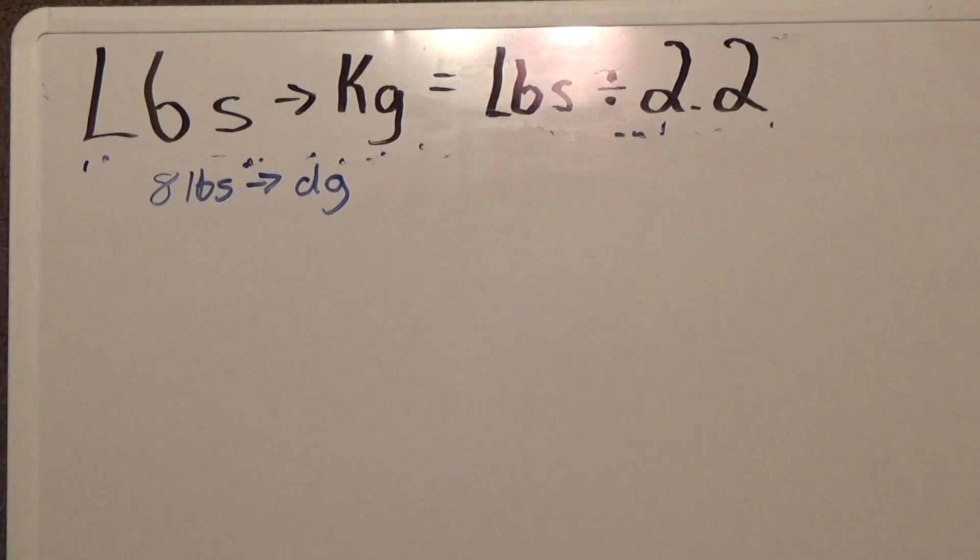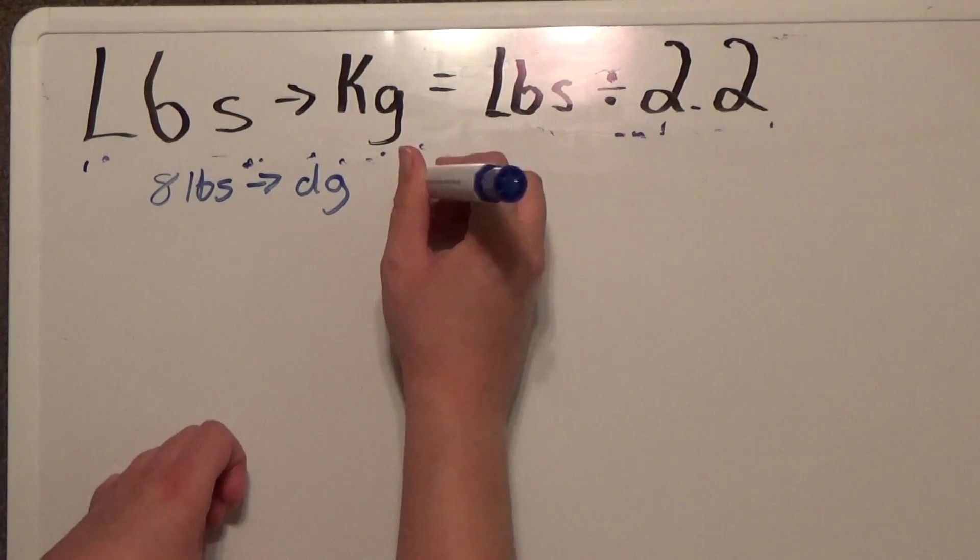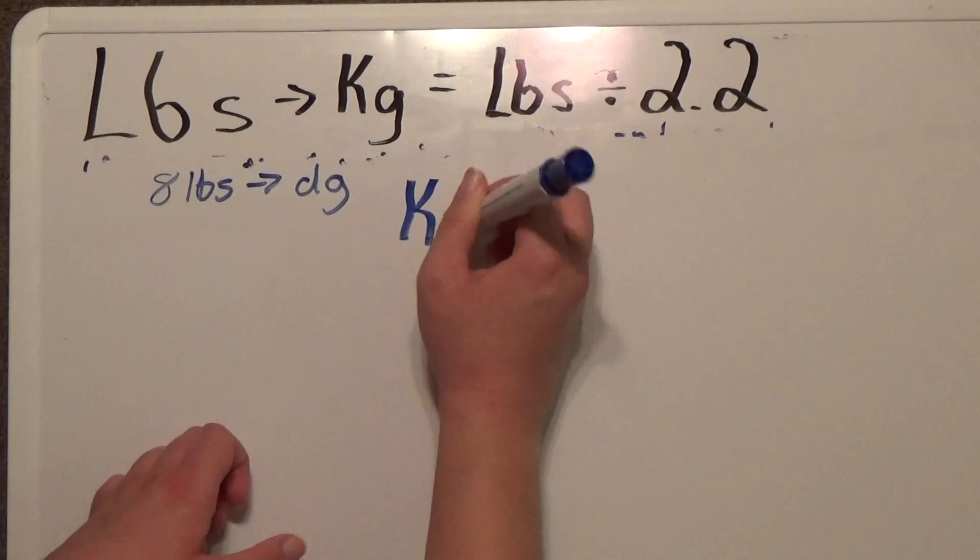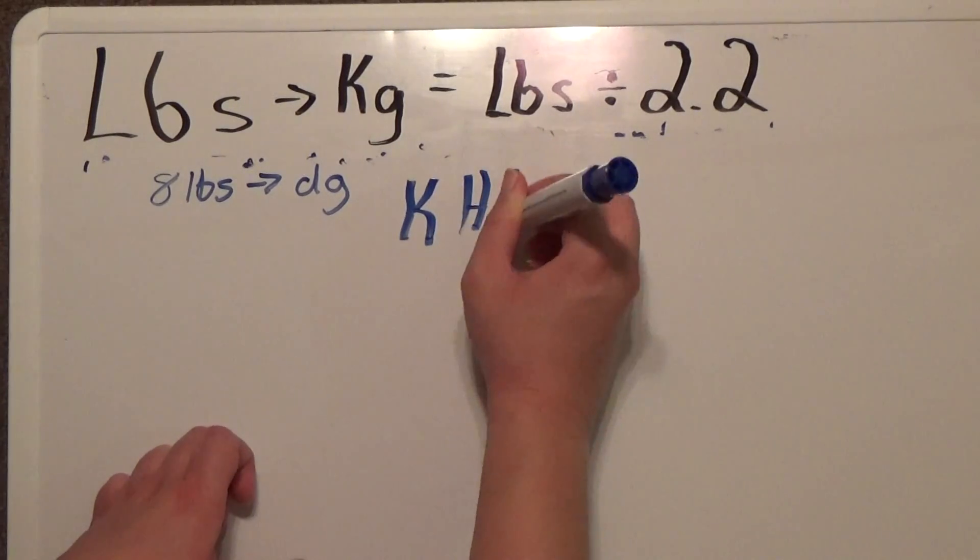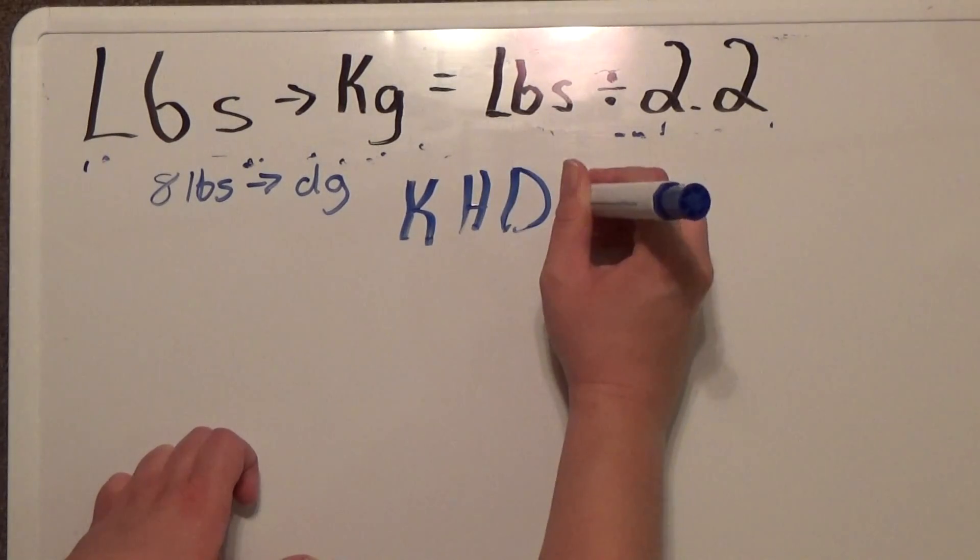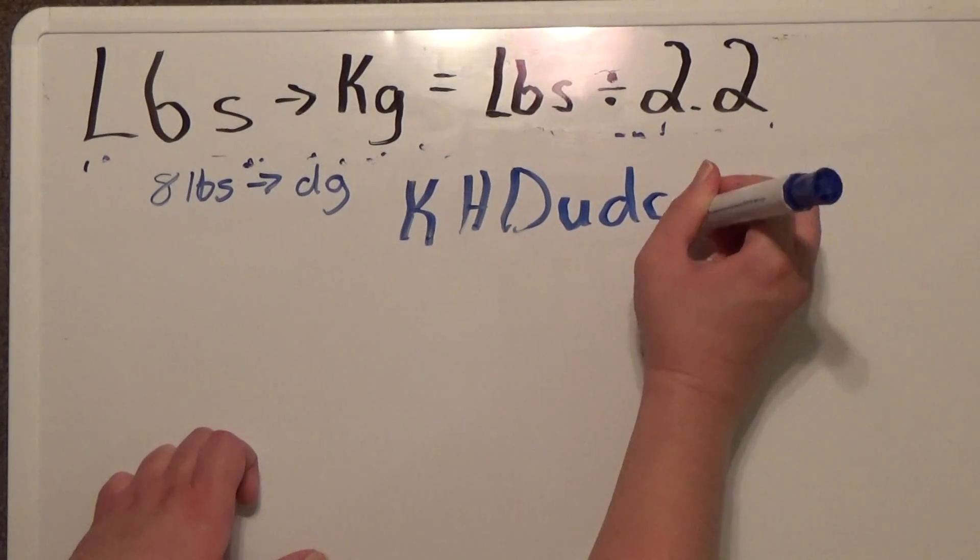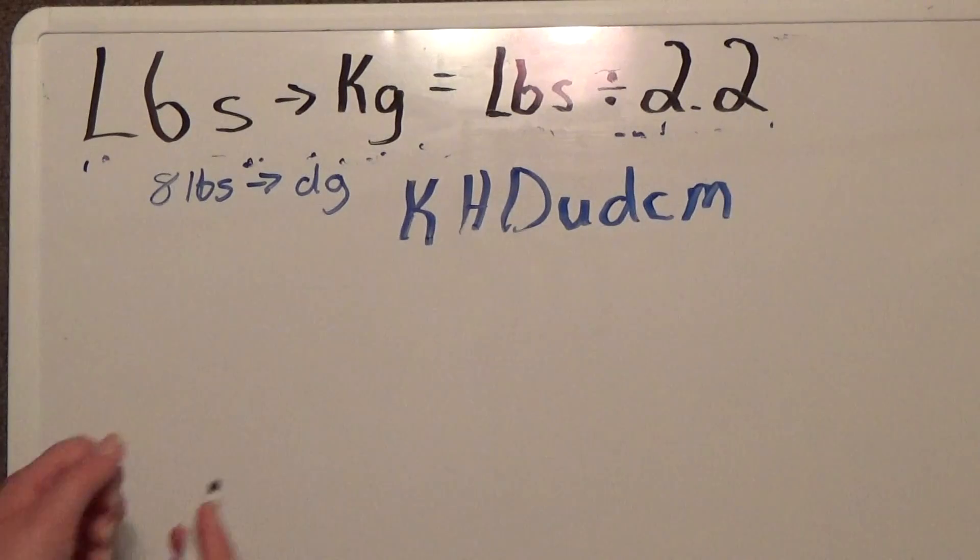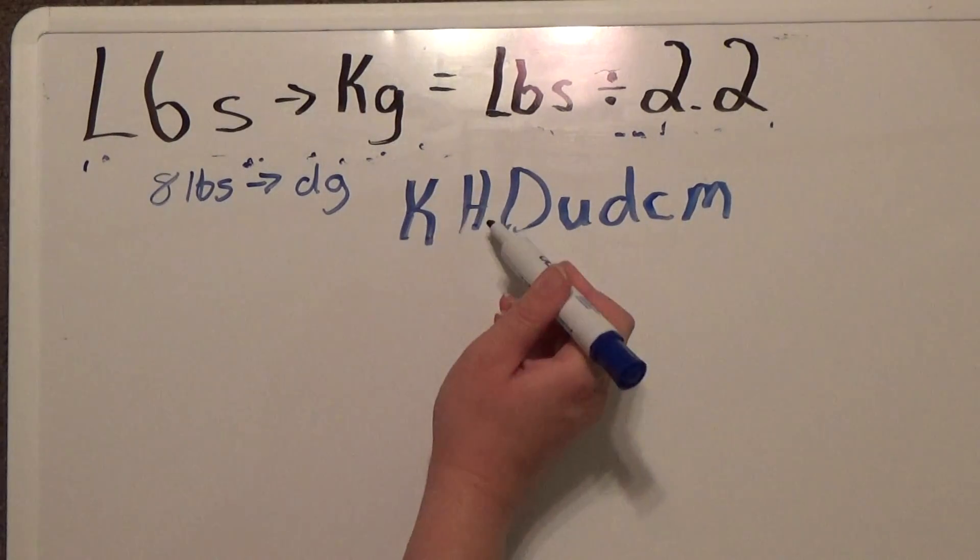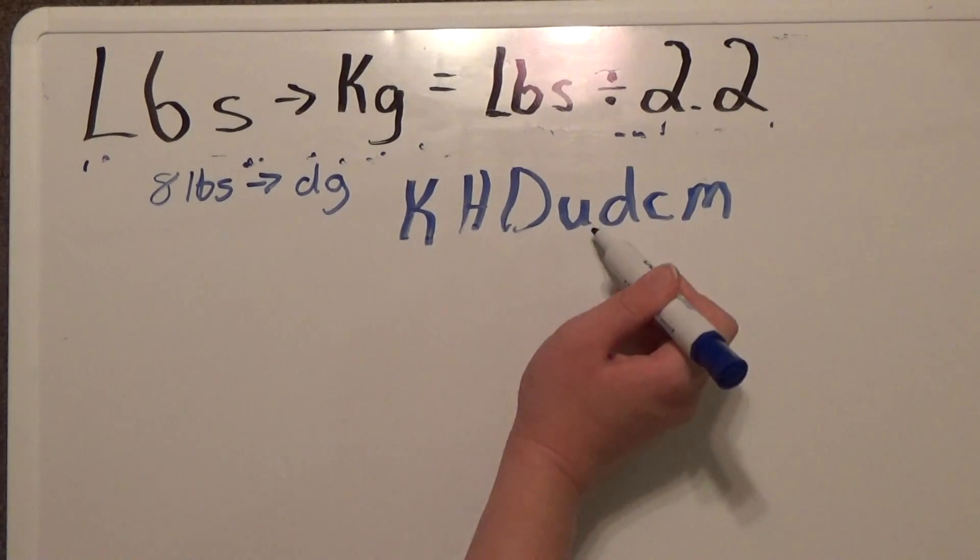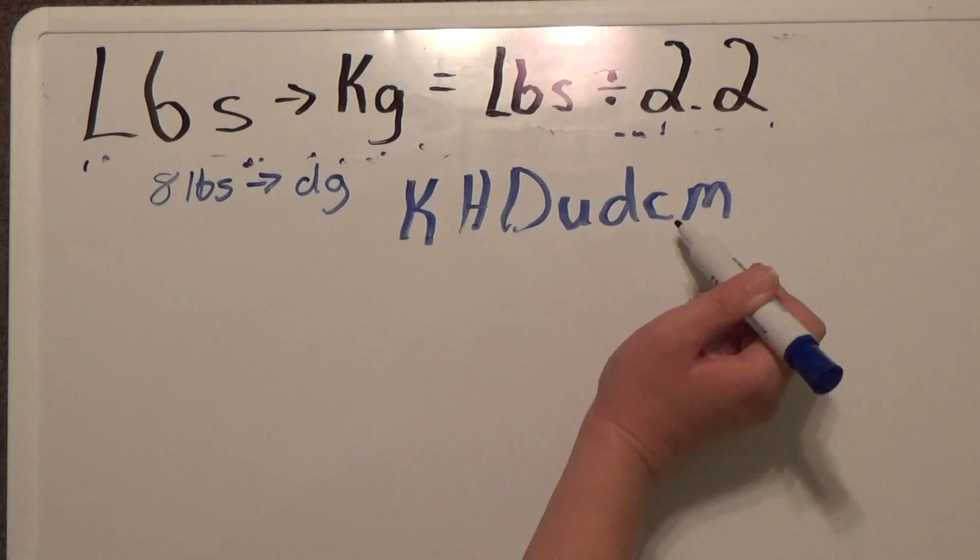The first thing I'm going to do here is write out my K, H, D, U, D, C, M. As you may remember from my previous video, that stands for kilo, hecto, deca, uni, desi, centi, and milli.